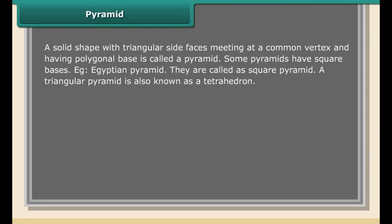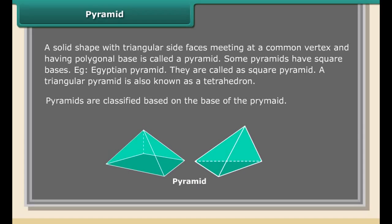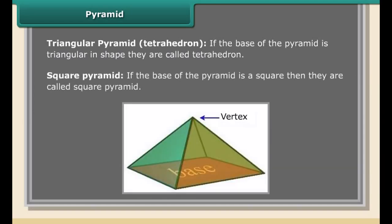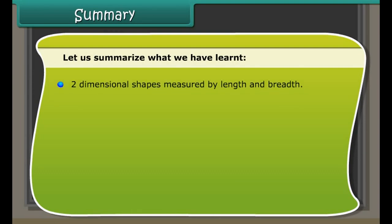Prism: a prism is a special type of polyhedron. It has two ends which are of the same shape and size. These ends are parallel to each other and are separated by rectangles. A prism is named according to its base. The base polygons are equal and parallel to each other, and the rectangular faces are called lateral faces. The lateral connecting edges are called lateral edges.